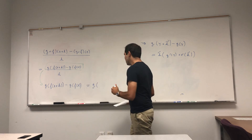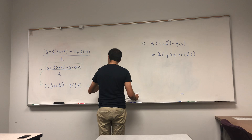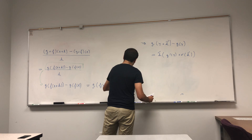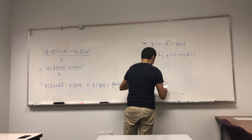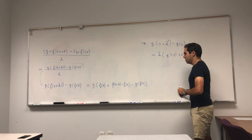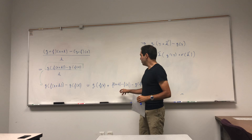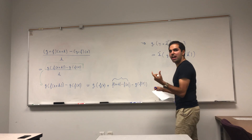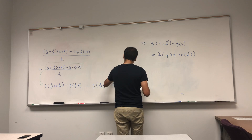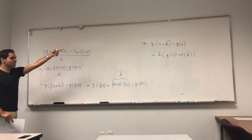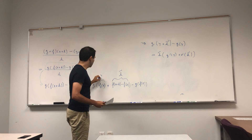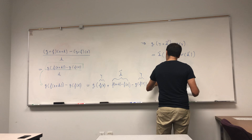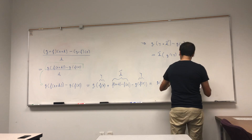Well, this is g of f of x plus some small term — namely f of x plus h minus f of x — minus the original term g of f of x. Notice you can add and subtract f of x and the identity still holds. This is great because this difference is actually a very small term, so let's call it h-tilde.